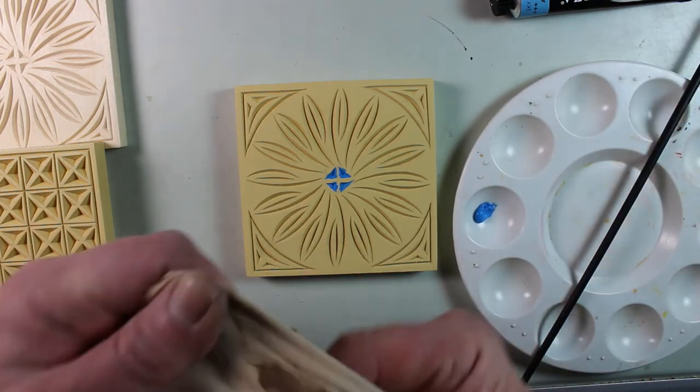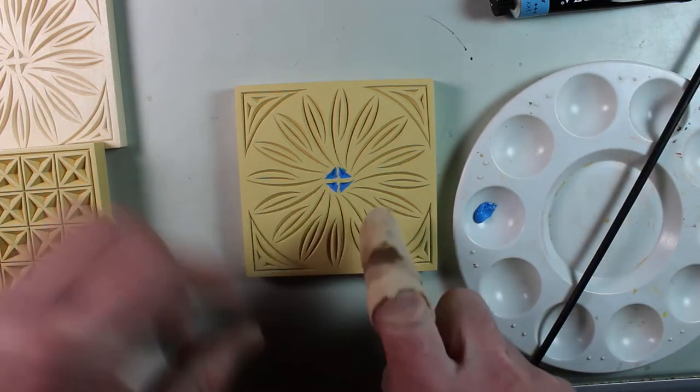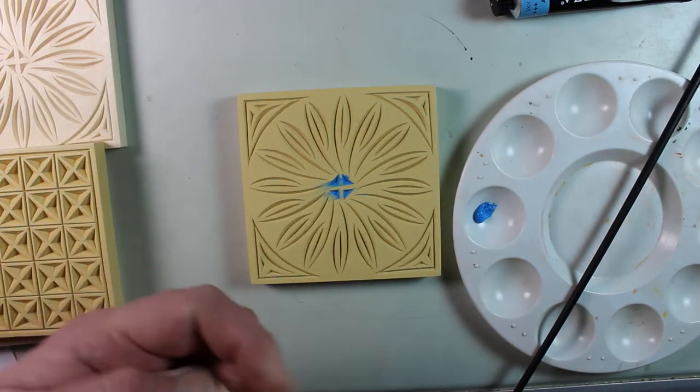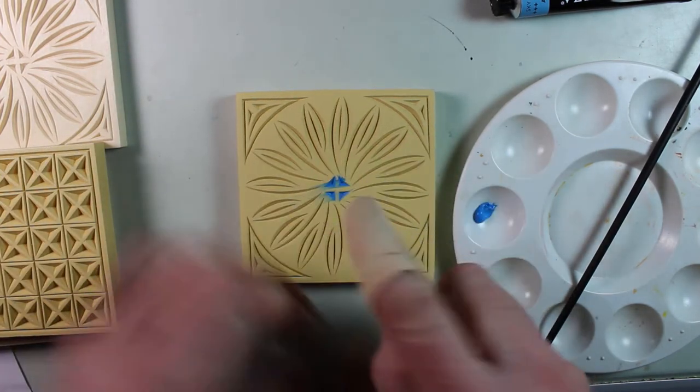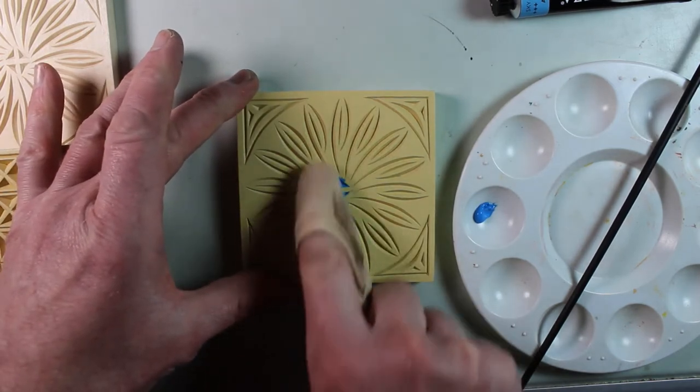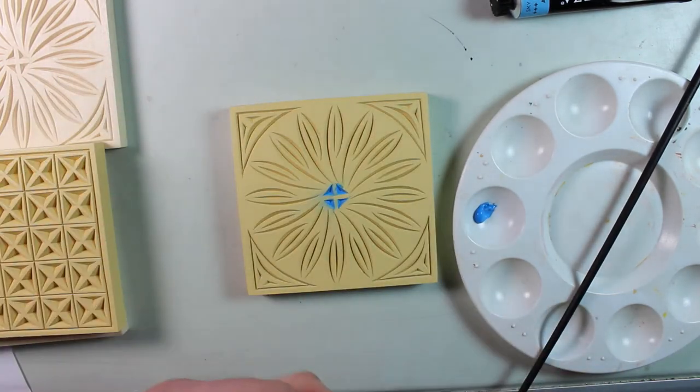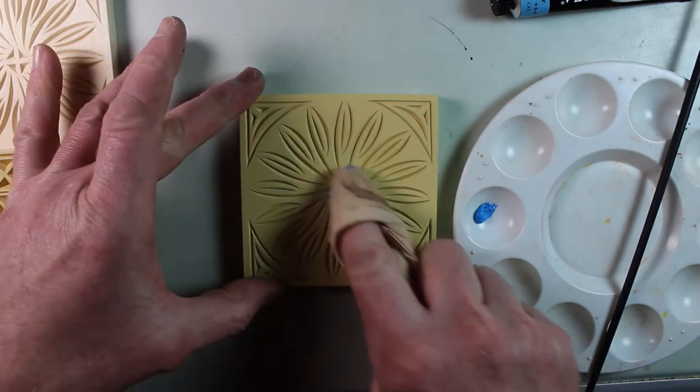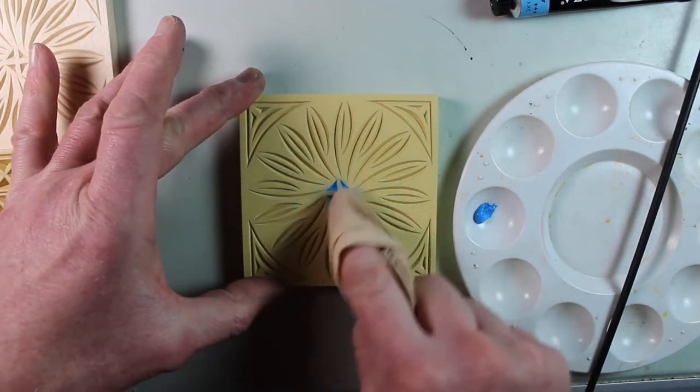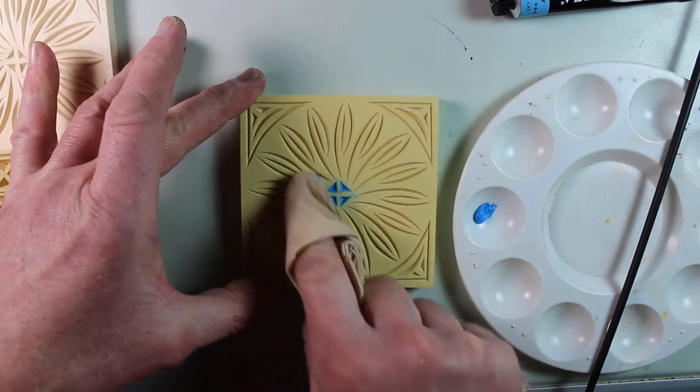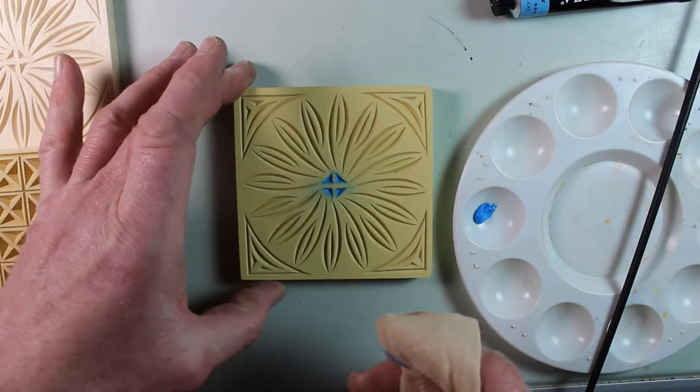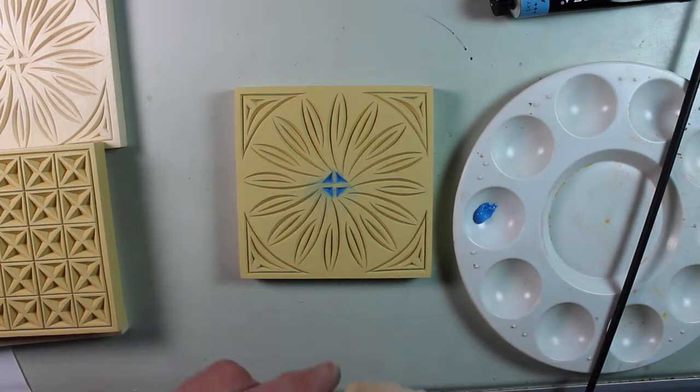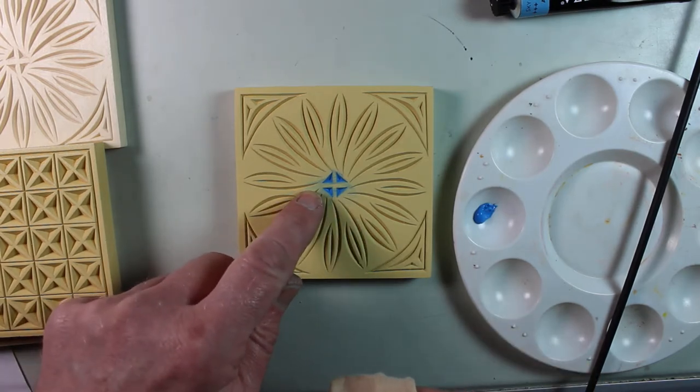Wrap the rag tightly around your finger and then just wipe off the surface, getting a new clean spot on your rag and wipe as you go. Have a little water handy to dampen the rag and that will help remove some of the excess that gets on the surface.